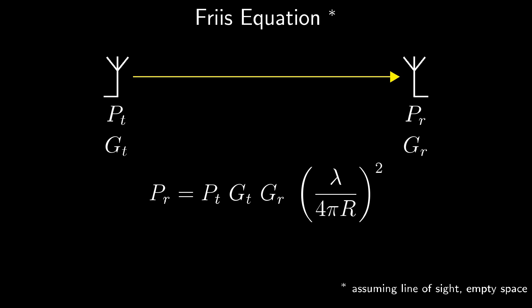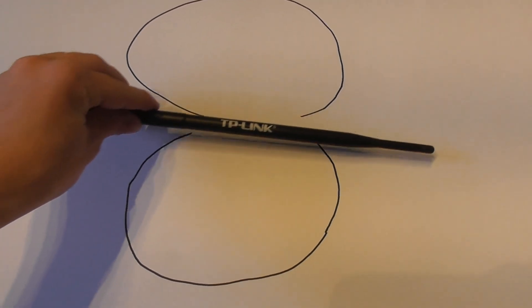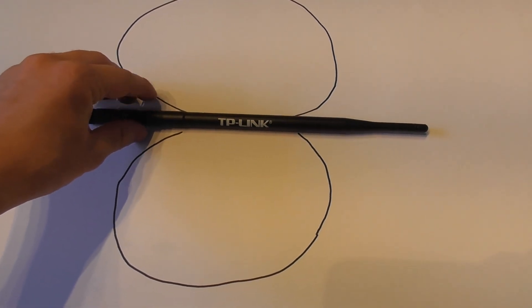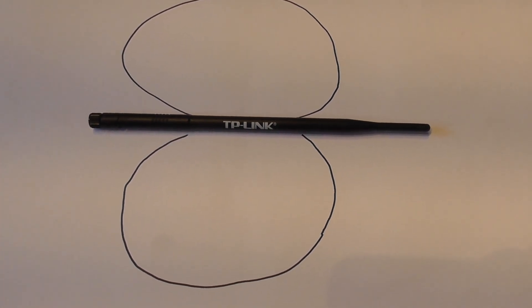An ideal isotropic radiator would have a gain of 0 dBi. This typical omnidirectional antenna has a toroidal radiation pattern and a gain of 8 dBi.